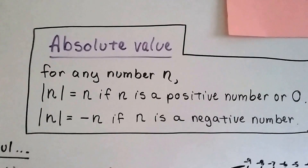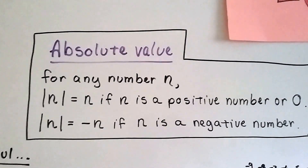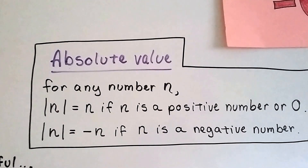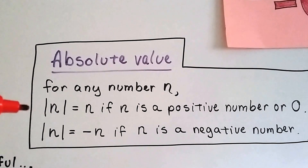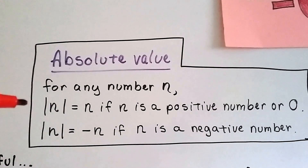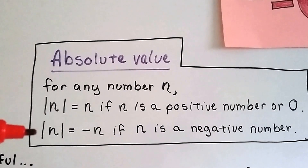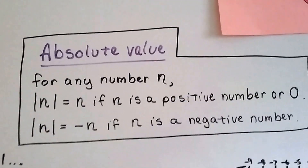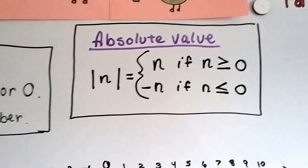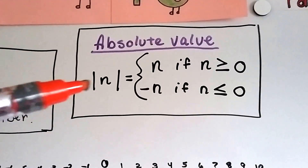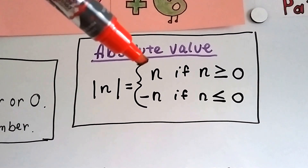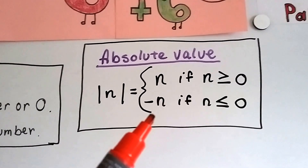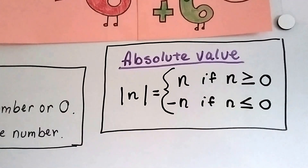Here's for your notes: absolute value for any number n. The absolute value of n is going to equal n if n is a positive number or zero, and the absolute value of n is going to equal negative n if n is a negative number. It can also be written like this: the absolute value of n is n if n is greater than or equal to zero, and it's negative n if n is less than or equal to zero.